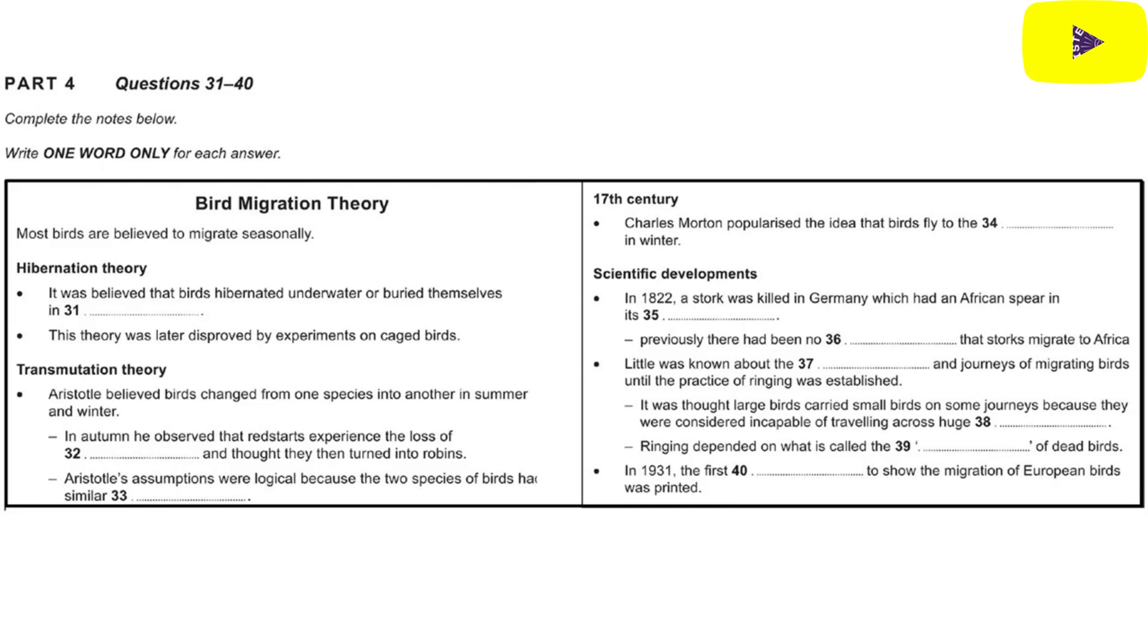One of the earliest naturalists and philosophers from ancient Greece was Aristotle, who was the first writer to discuss the disappearance and reappearance of some bird species at certain times of year. He developed the theory of transmutation, the seasonal change of one species into another, by observing redstarts and robins. He observed that in the autumn, small birds called redstarts began to lose their feathers, which convinced Aristotle that they changed into robins for the winter and back into redstarts in the summer. These assumptions are understandable, given that this pair of species are similar in shape, but are a classic example of an incorrect interpretation based on correct observations.